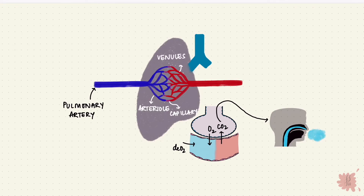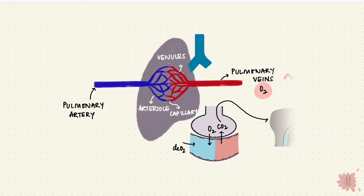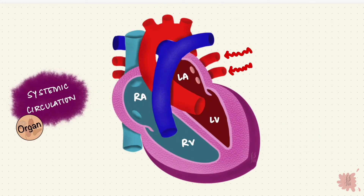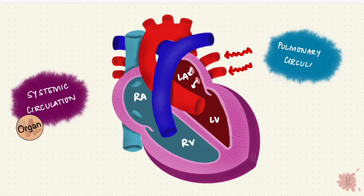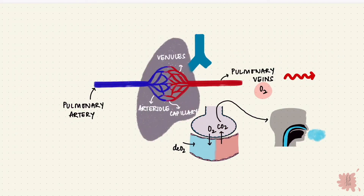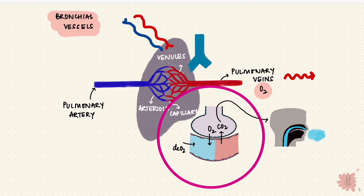These capillaries then form venules and then form pulmonary veins, so now the veins are carrying oxygenated blood. The pulmonary veins carry this blood all the way back to the heart and drain into the left atrium — so oxygenated blood has reached the left atrium. This is the pulmonary circulation. The lungs also have systemic circulation from the aorta through the bronchial vessels, because they need nutrition too. The pulmonary circulation is specifically for gas exchange.